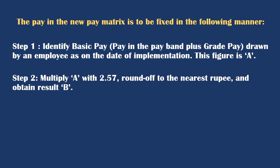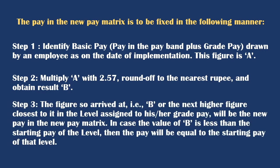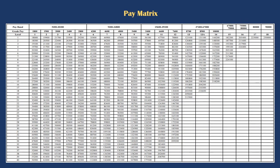Step 3 — the figure so arrived at, i.e., B, or the next higher figure closest to it in the level assigned to this grade of pay, will be the new pay in the new pay matrix. In case the value of B is less than the starting pay of the level, then the pay will be equal to the starting pay of that level.